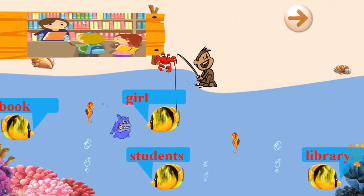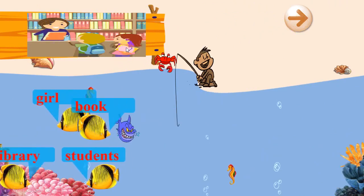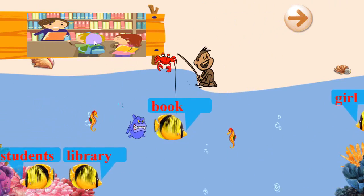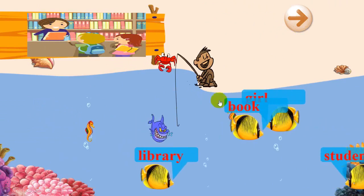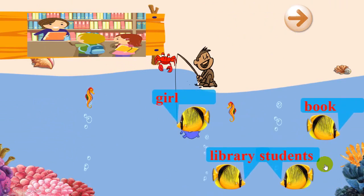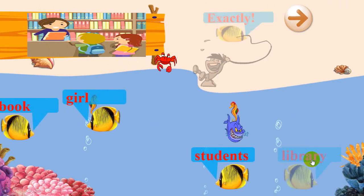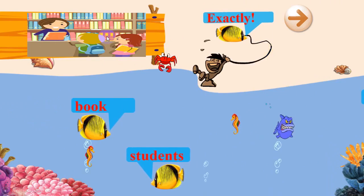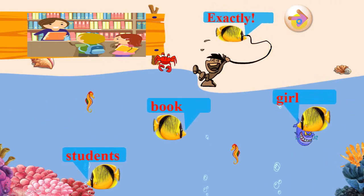Let's take a look at this picture here. I see two students — maybe they are asking something. So, can you guess which place is it? Book, girl, students, or library? Let's choose library. Yes, that's right. This place is library. Okay, next.